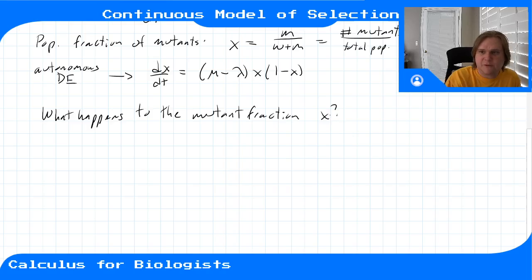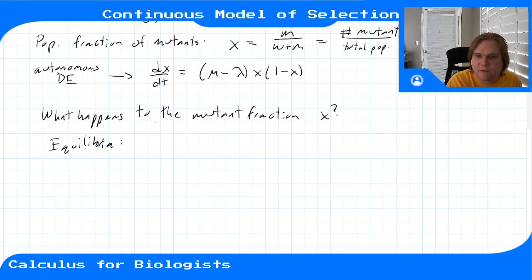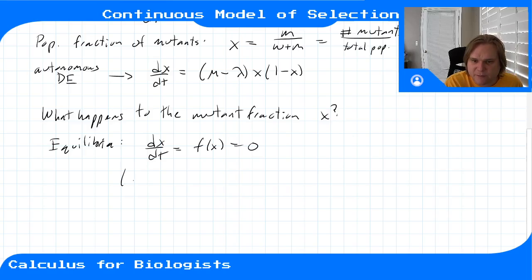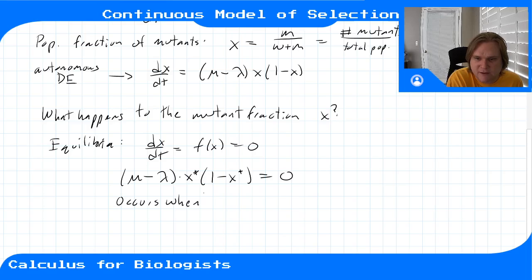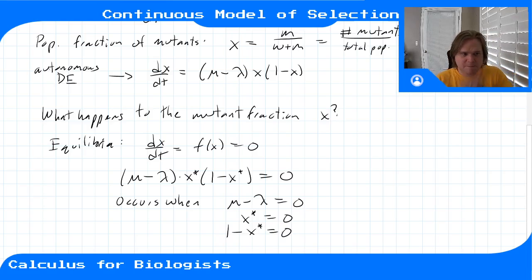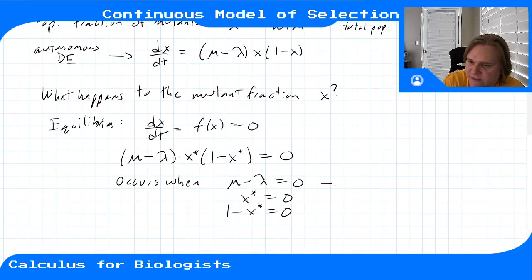Before doing more, let's look for equilibrium points — where dx/dt = (μ − λ)·x*·(1 − x*) = 0. This equals zero in three situations: when (μ − λ) = 0, when x* = 0, and when (1 − x*) = 0. The first case, μ − λ = 0, means μ equals λ.